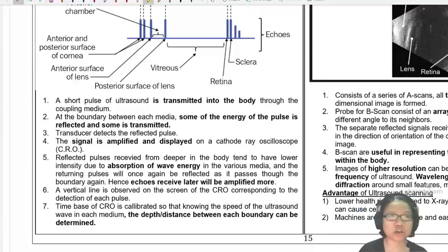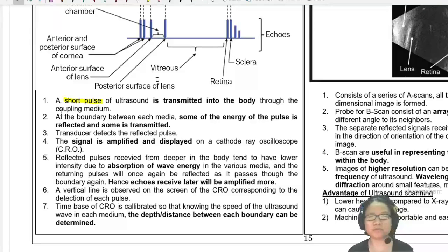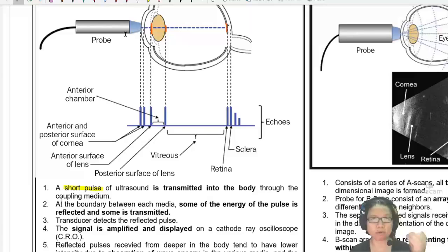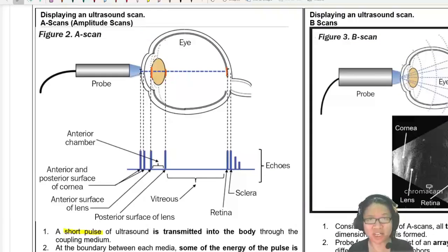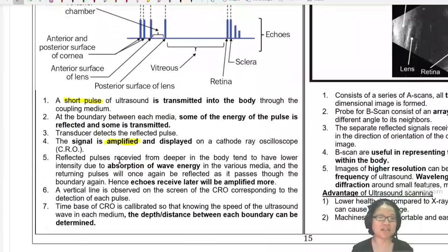We send a short pulse of ultrasound into the body using a coupling medium like gel, your KY jelly. There's some transmitted and some reflected at the boundary between each media. Some energy is reflected and some is transmitted. The transducer detects the reflected pulse. This probe is both generator and detector of the ultrasound. The signal is amplified and displayed on the CRO. We have to amplify the signal because by the time it reaches back to the probe, the intensity could be very small. Due to attenuation and reflection, you lose energy along the way. We can use operational amplifiers for that.